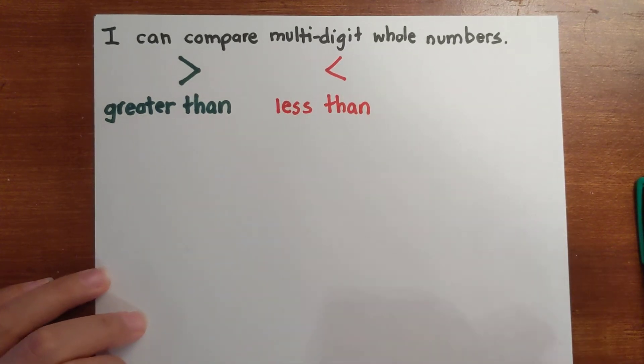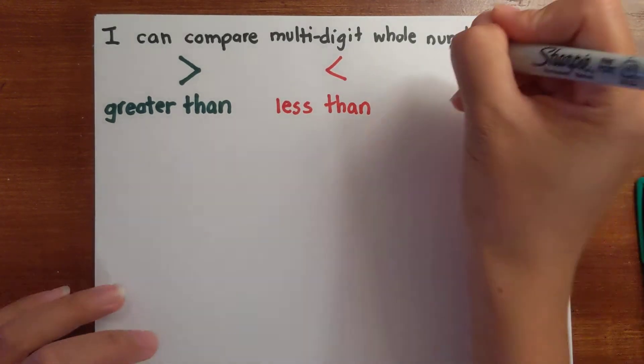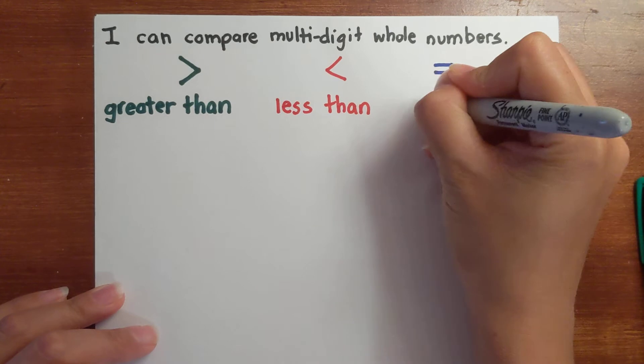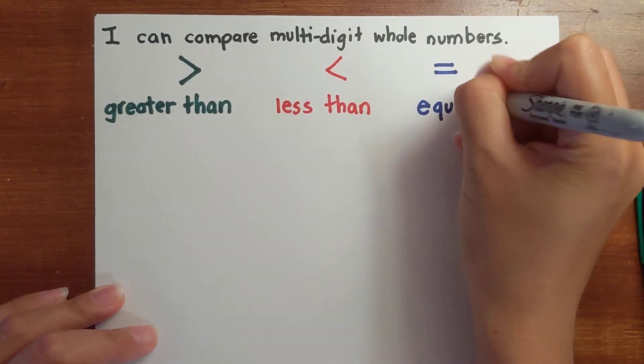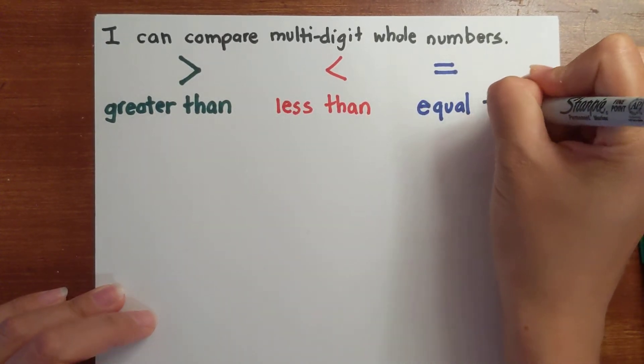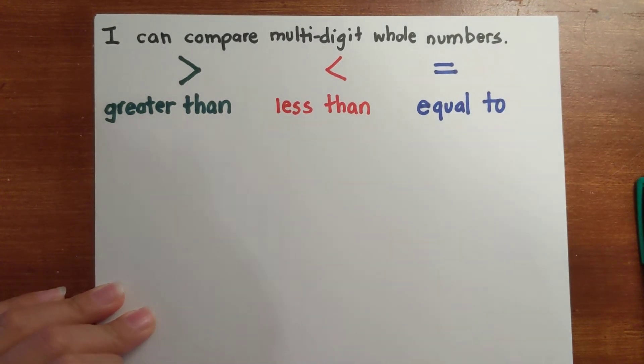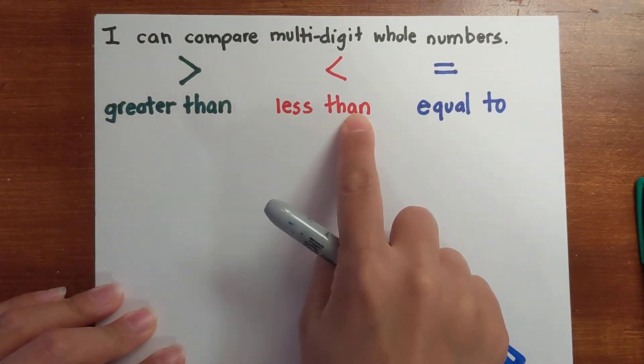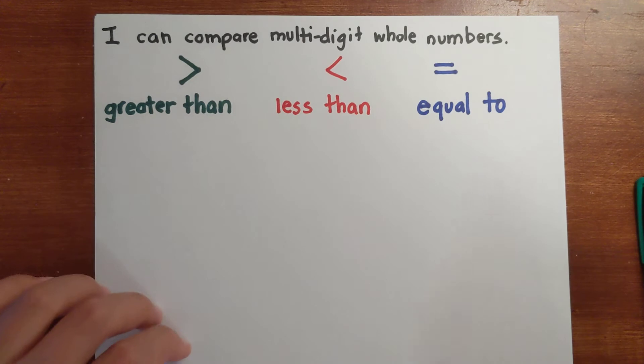And then finally, we have our equal to. So I can compare multi-digit whole numbers using the three symbols: greater than, less than, and equal to. Now, to compare numbers is fairly straightforward.